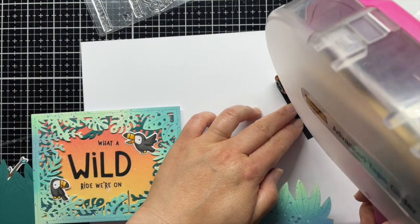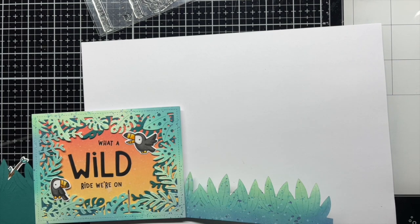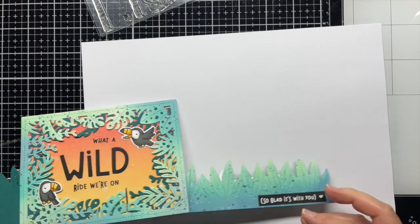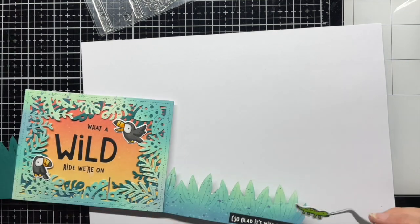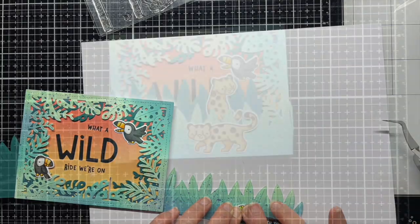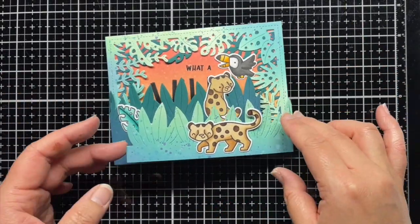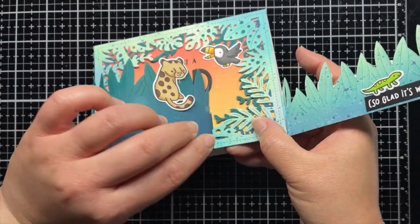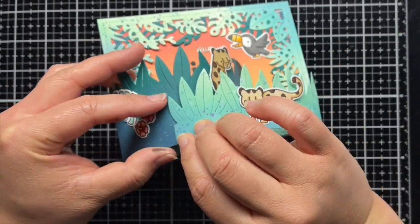Finally, I added another sentiment from 2 Can Do It onto the inside of one of the panels for an extra special message. I love that this card folds completely flat for mailing but then can be turned into a beautiful 3D design that can be displayed by the recipient.